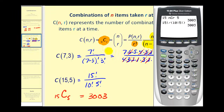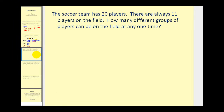Let's take a look at some problems. A soccer team has twenty players and there are always eleven players on the field. How many different groups of players can be on the field at any one time? Since we're not considering positions, the order does not matter. Therefore this is a combination of twenty players taken eleven at a time.